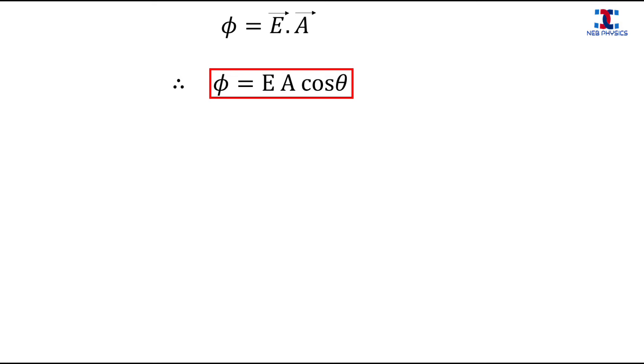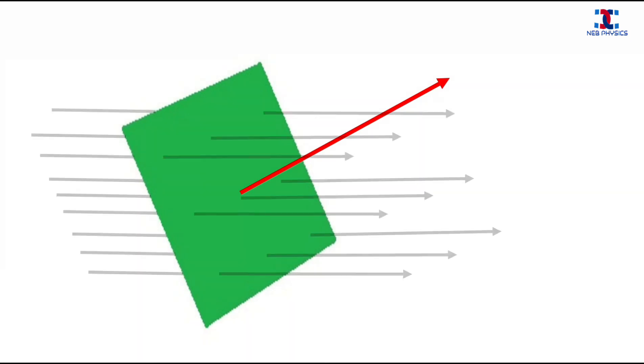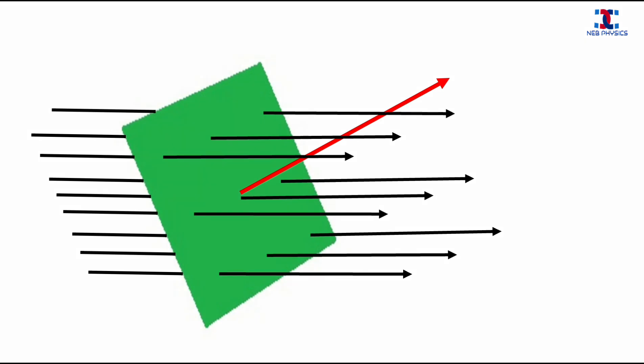Now let's understand this better with the help of this animation. Suppose this is a plane surface of area A. To show the direction of the area of the surface, we draw a line perpendicular to the surface. The red arrow line shows the direction of the area of the surface. You can see that the plane surface is kept in the path of electric lines of force such that the perpendicular drawn to the area makes an angle theta with the path of the electric lines of force.